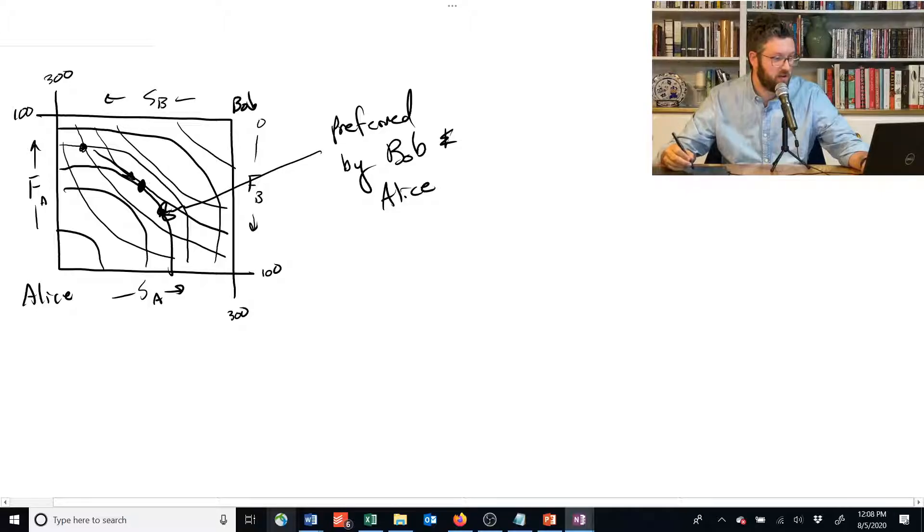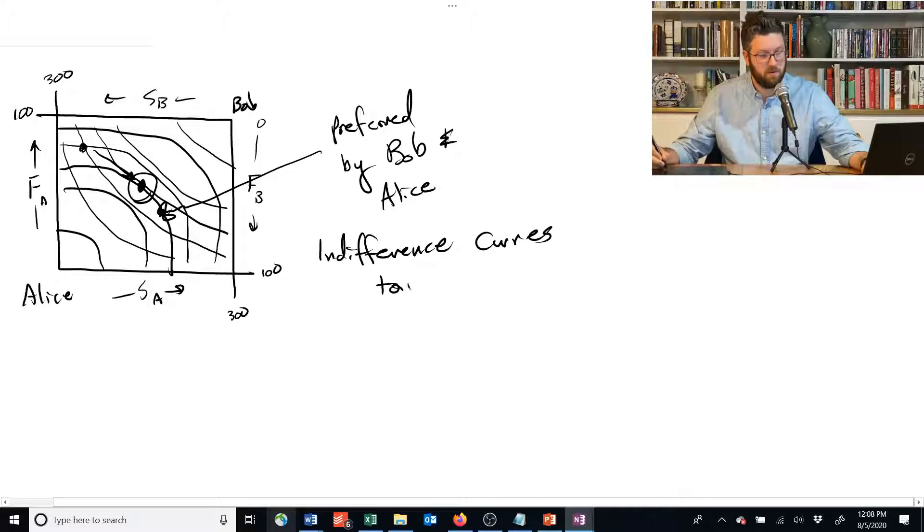At this point here, the indifference curves are just touching. They're tangent to each other, and so we have achieved a Pareto-efficient outcome. We can't make any of them better off. We have achieved exchange efficiency.